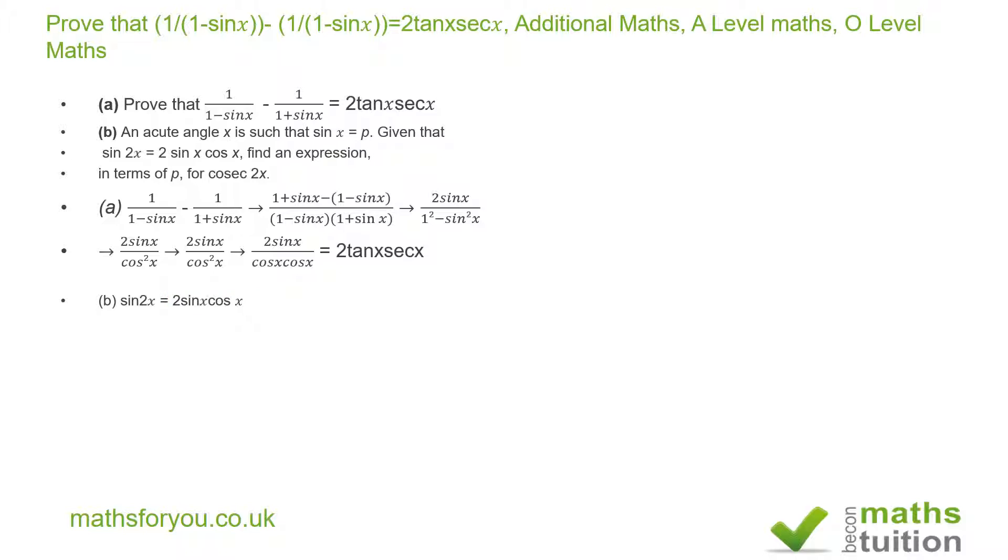We now try to replace cos x with sin x. So that b then becomes 2 sin x multiplied by the square root of 1 minus sin squared x because this becomes our cos x.